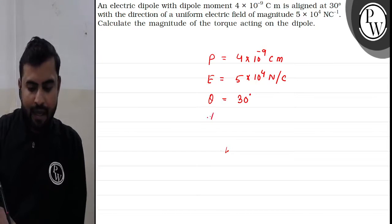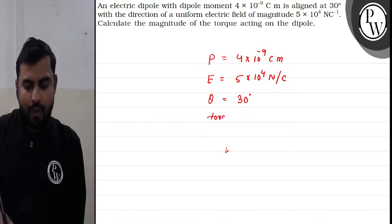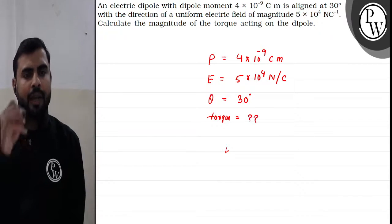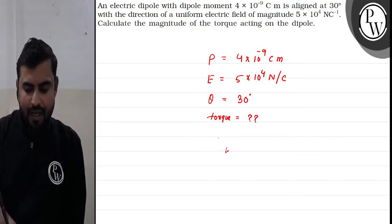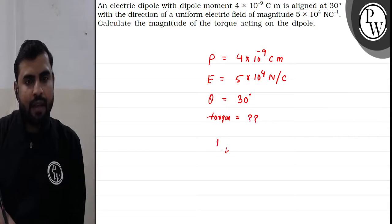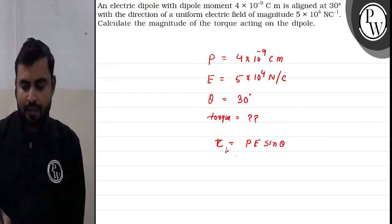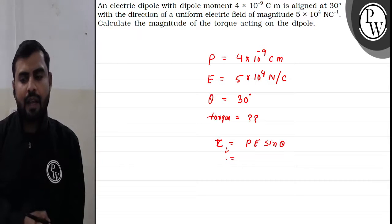We need to find the torque acting on this dipole. Very simply, we all know that torque τ is given as P E sin θ, which can also be written as P cross E.